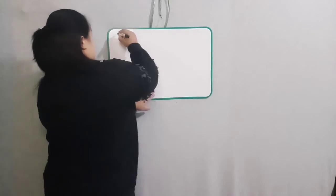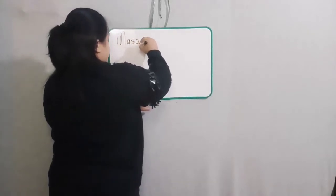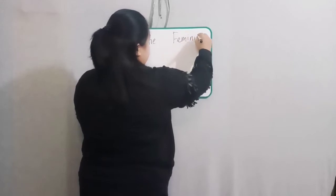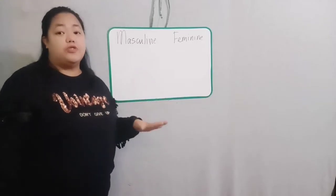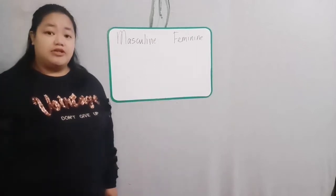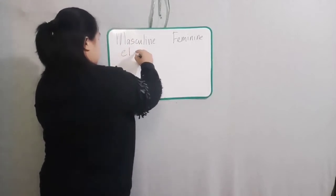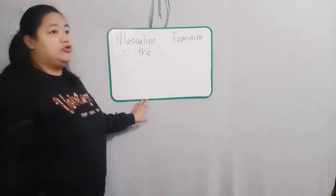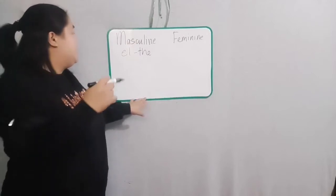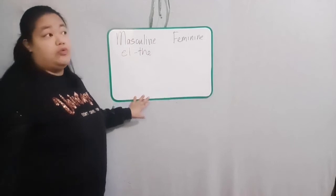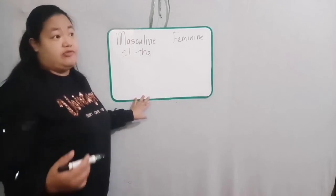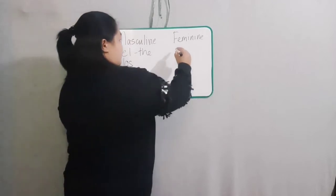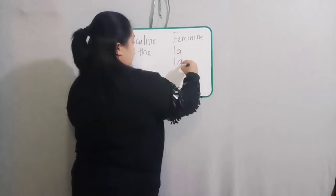Genders will be masculine and feminine. We have four specific articles that denote the genders of nouns in Spanish. For masculine, the article is 'el', which means 'the'. Remember from our discussion on pronouns: the 'e' in 'él' should have an accent mark — that's because without it, 'el' means 'the', which is the article used for nouns. The plural form is 'los'. For feminine, we have 'la', and the plural form is 'las'.